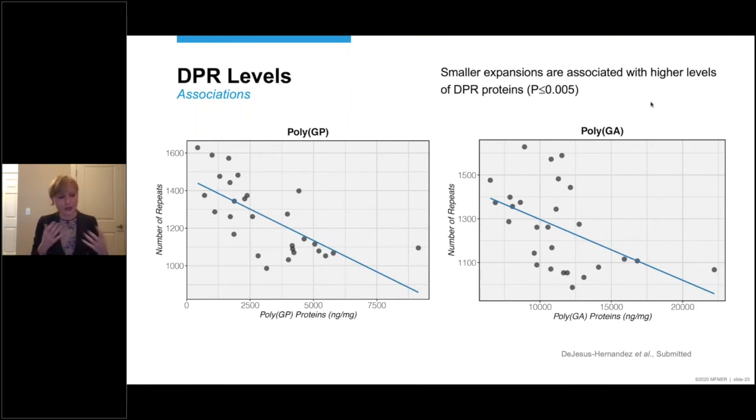And based on this information, we said, well, maybe this is happening. Maybe if you have a small expansion, it's easier to transcribe it. You have higher levels of expansion containing transcripts. Those transcripts serve as templates for repeat-associated non-ATG translation. And therefore you get higher levels of dipeptide repeat proteins as well.